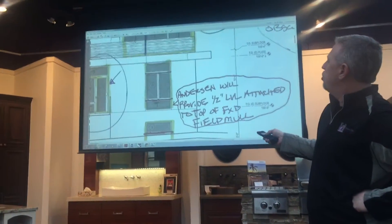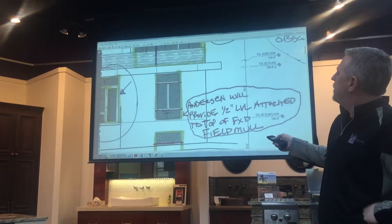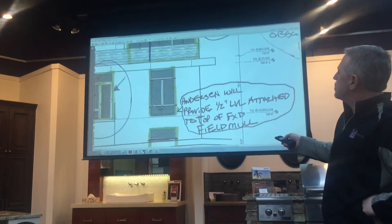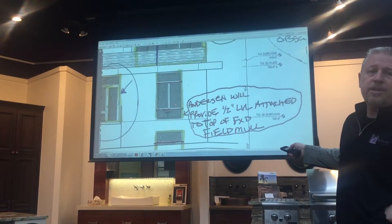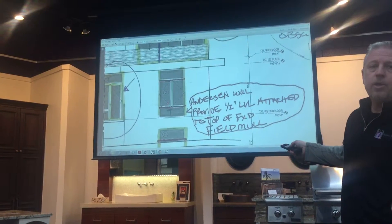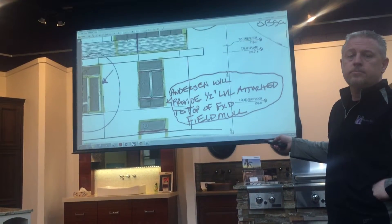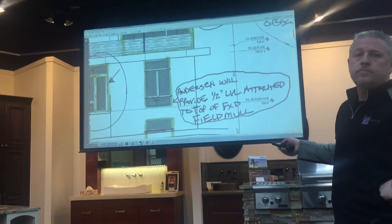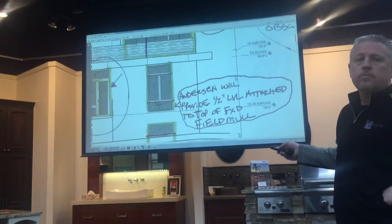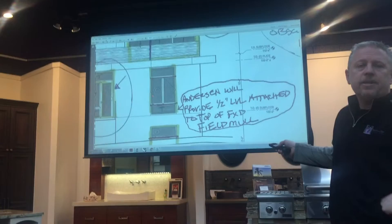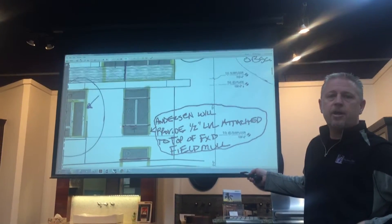Here we have a complex mullion configuration. We've got a fixed window underneath, a twin casement, and then a fixed window on top. The key is we can treat these individual mullion structures as units using the engineered evaluations available on the Anderson Eagle website. We're attaching these windows to make one big rough opening, and we're going to help educate our customers on how to get the proper structure and rating to put that all together. Anderson's already done the work, and these engineered evaluations are available at eaglewindow.com.